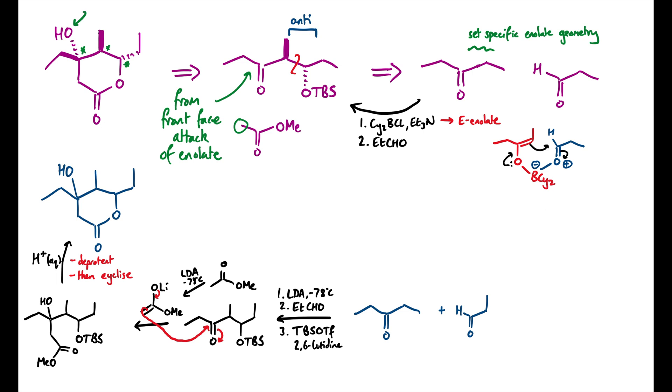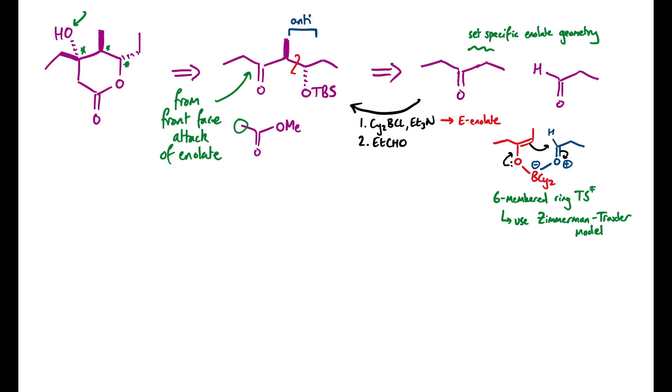So here we have a six-membered ring transition state and we can use the Zimmerman-Traxler model to explain the result. The proposal of the model is that the lowest energy transition state should be in a chair conformation. But here there are technically two equal energy transition states as the product that we're forming is chiral. Those two starting materials, the enolate and the aldehyde, are both completely flat, as in achiral. So there'll be two mirror image transition states of the same energy, you could call them enantiotopic, that will form the two enantiomers of product as a racemic mixture.